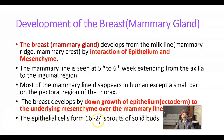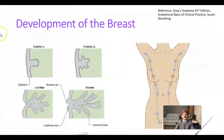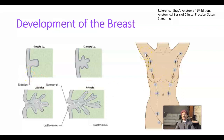The epithelial cells form 16 to 24 sprouts of solid buds. At the sixth week of intrauterine life, this is the surface epithelium and this is the milk line or mammary ridge or mammary crest, extending from the axilla to the inguinal region, but in humans it is confined to the pectoral region. Around the 12th week there will be solid sprouts of the epithelial cells.